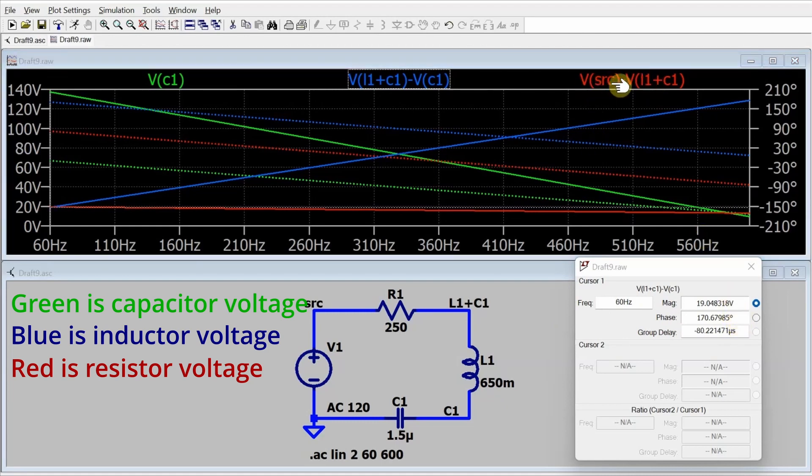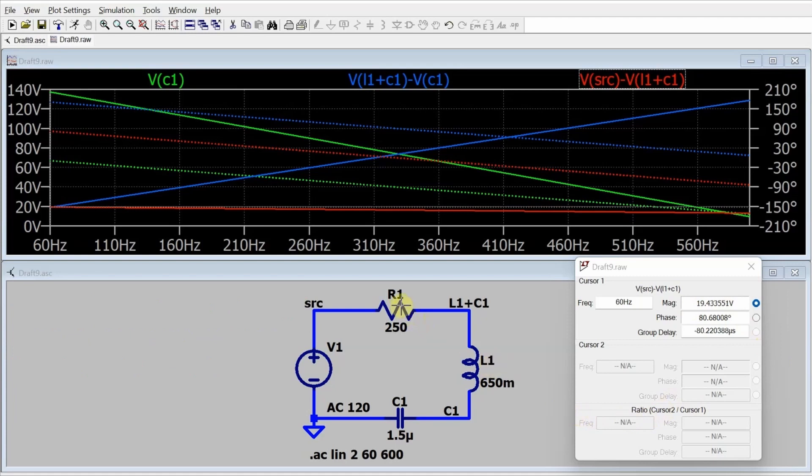And finally, if I click on the red label here, that will give me the reading for the voltage across the resistor of 19.433 volts with a phase angle of 80.68 degrees. The last thing I need is the current.